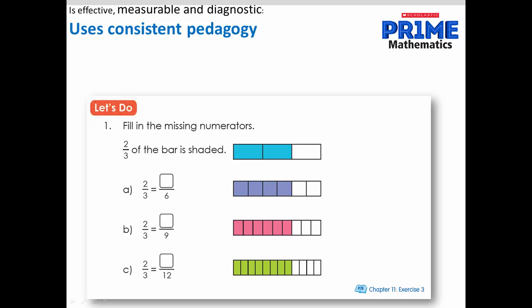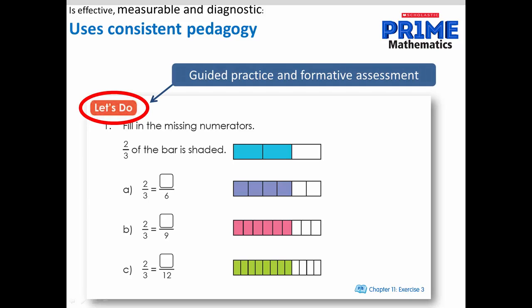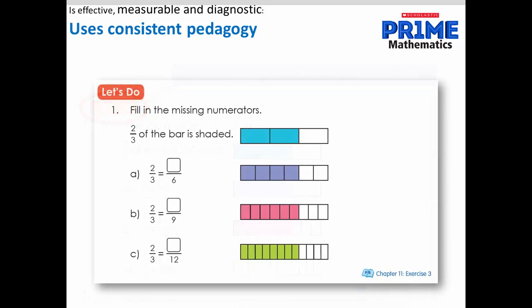After Let's Learn, students are guided to demonstrate what they've learnt in the Let's Do part of the lesson. This is also a quick formative assessment that teachers may use to differentiate instruction. For instance, some students may be actively encouraged to use concrete materials to complete the tasks, and others may no longer need them.